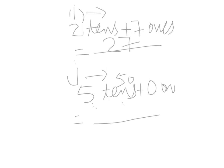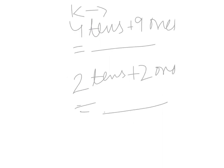Five tens plus zero ones equals fifty, so we write here fifty. Part k is four tens plus nine ones. Four tens make forty, and forty plus nine equals forty-nine. We write here forty-nine. Four tens plus nine ones equals forty-nine.